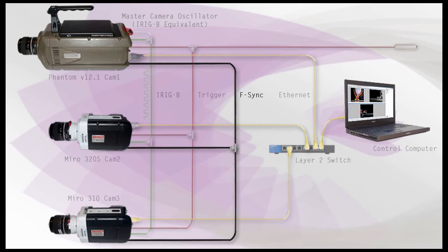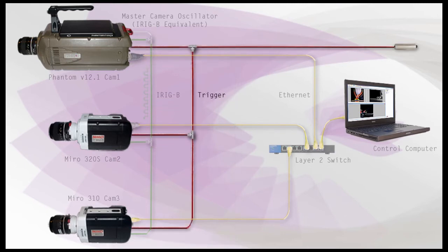Next, I need to connect the F-Sync BNC connectors of all three cameras together. The F-Sync signal threshold is plus 5 volts maximum, so the input is also compatible with TTL levels and must be properly terminated at 50 ohms. Like the iRig connector, the location of the connector will be camera dependent. This signal is required to initiate the acquisition of image frames.